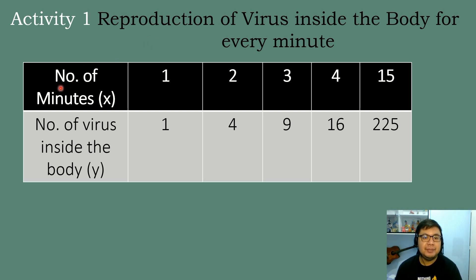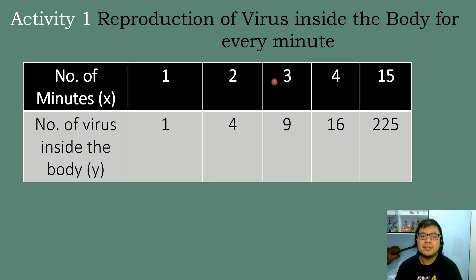We have the number of minutes in terms of x, and the number of virus inside the body in terms of y. So for every 1 minute, there is only 1 virus. For every 2 minutes, there will be 4 virus inside the body. 3 minutes equals 9 virus, 4 minutes equals 16 virus, and 5 minutes equals 25 virus inside the body.